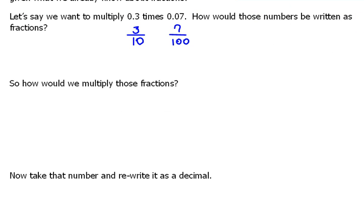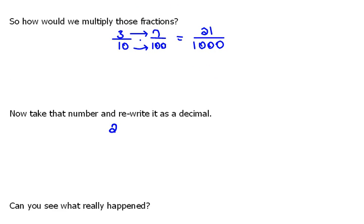Now, what if we wanted to multiply those two numbers? If I wanted to multiply 3 tenths times 7 over 100, then I would multiply straight across the top and straight across the bottom. So, 3 times 7 would be 21, and 10 times 100 would be a thousand. Now, let's look at that number, 21 over a thousand. If we read that, that's really 21 one-thousandths.